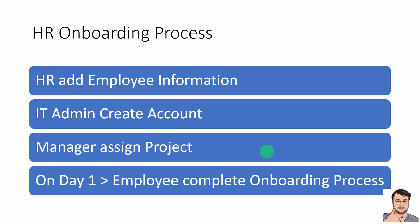The overall onboarding process covers four different steps. The first step is HR adding different information about the employee. Once HR's work is completed, IT admin sets up the employee's organizational account, VPN setup, device setup — everything is done by IT admin. Once IT admin creates the account, the manager assigns the employee to a specific project and business unit. In the last stage, when the employee joins the organization on day one, they perform some operations and complete the overall onboarding process.